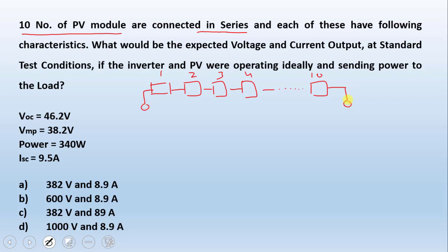Each of these modules have following characteristics which are given here, and we need to find out the expected voltage and current output of the system. Remember, the question is asking for the system under what conditions? First, we have Standard Test Conditions, which is STC. And the other information is given that the inverter and PV are operating ideally and sending power to the load. So ideally means there are no losses.